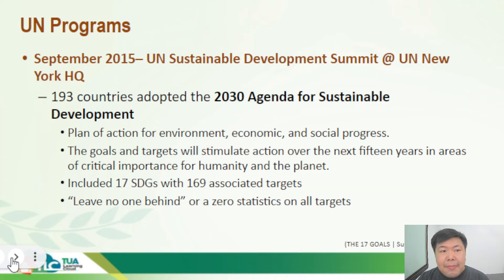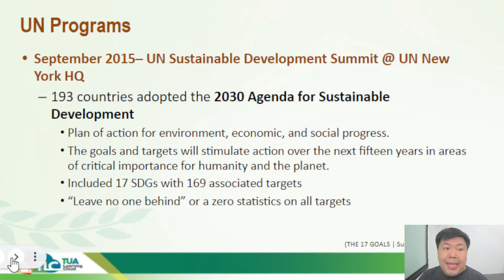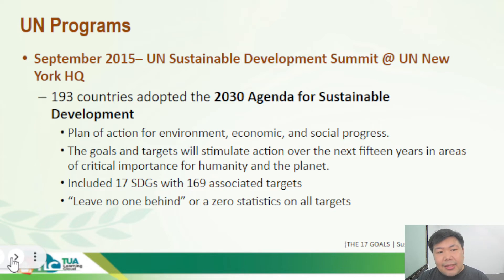In September 2015, at the UN headquarters in New York — the UN Sustainable Development Summit attended by 193 countries — they adopted the new 2030 Agenda for Sustainable Development. This new program included a plan of action for the environment, the economy, and social progress — three things that were overlooked during the MDG era.